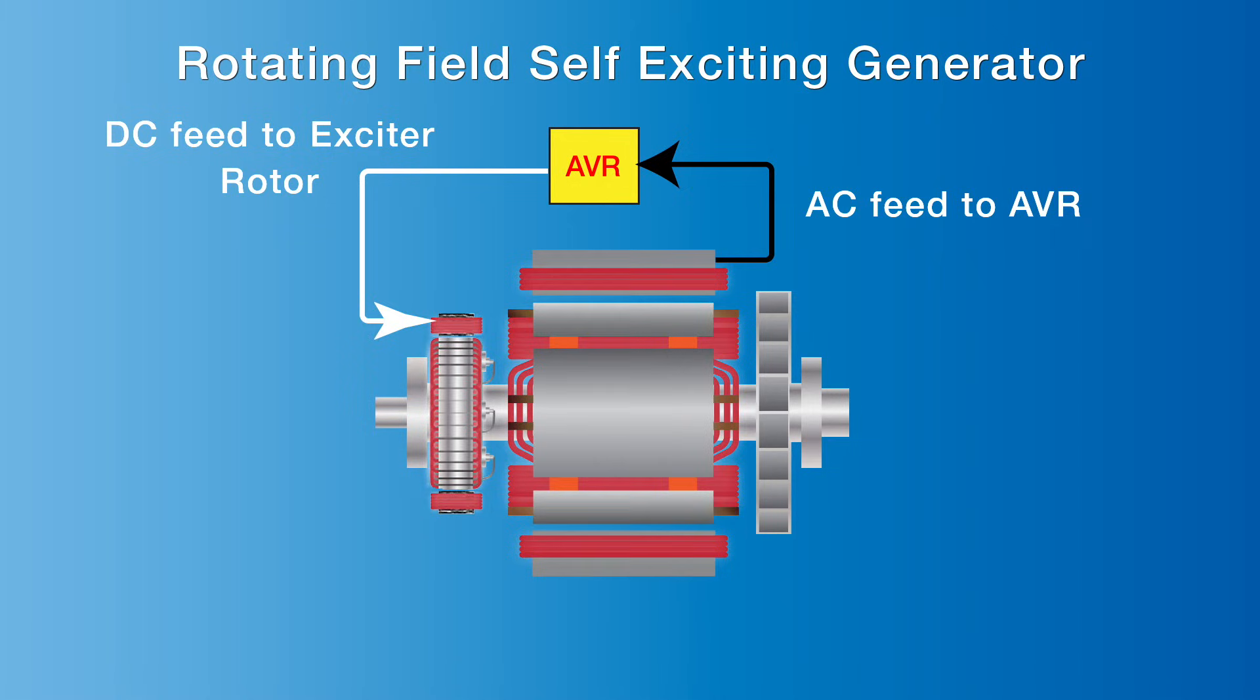A rotating diode assembly on the exciter converts this AC current to DC. The DC current fed into the main rotor windings also generates a magnetic field.